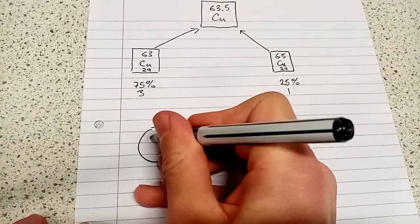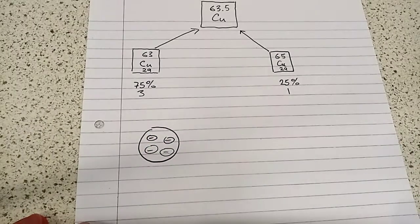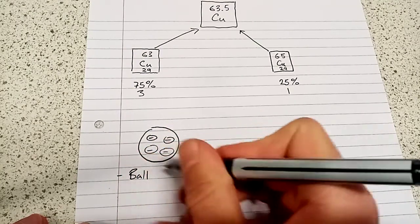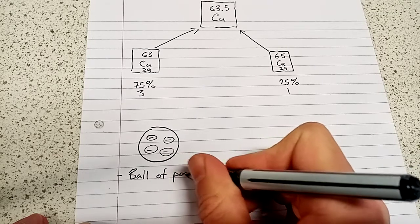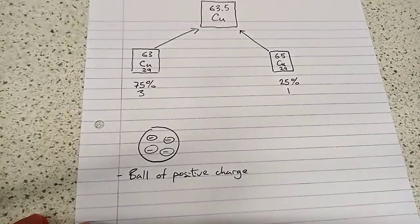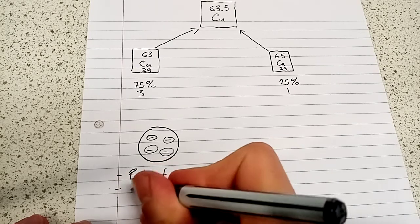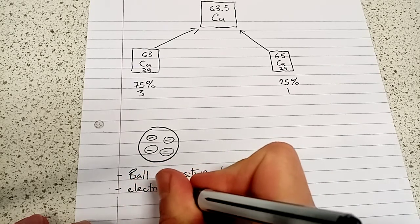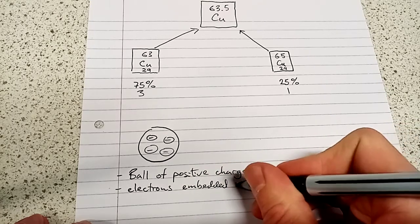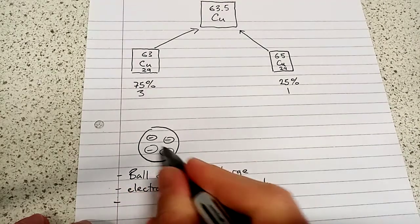And in the plum pudding model, here's what you had. We have a single ball or sphere of positive charge. The electrons are embedded randomly, and there is no nucleus at the center.